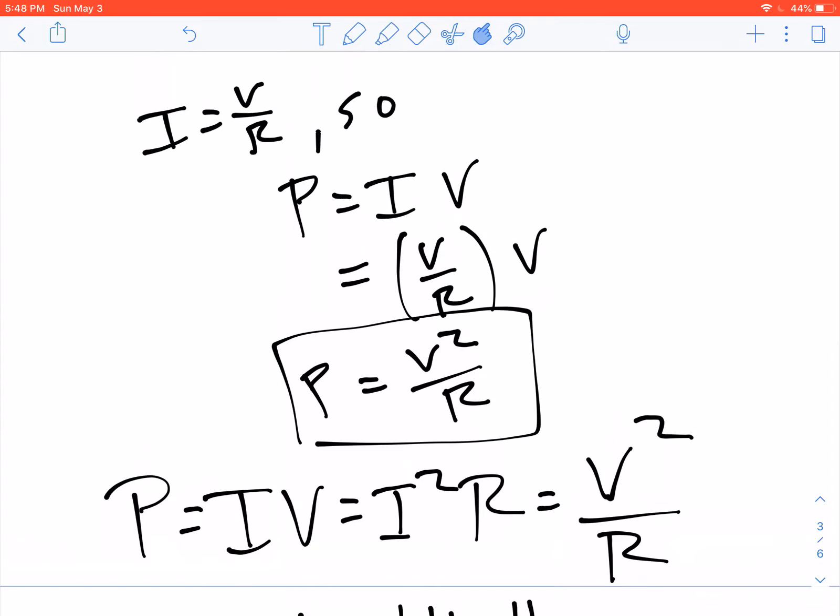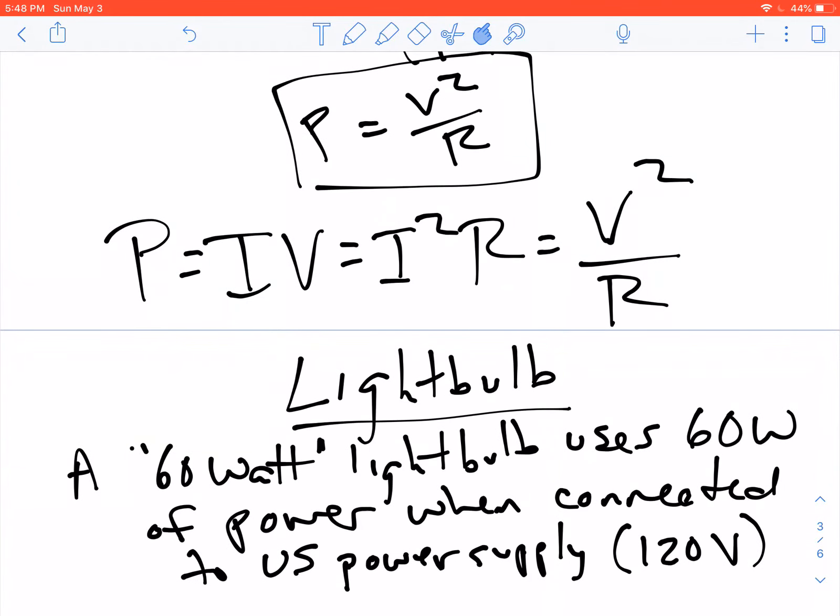Now I'd like to look at a particular example. If you're familiar with light bulbs, a 60 watt light bulb is a light bulb that uses 60 watts of power when it's connected to the U.S. power supply. In the U.S., when you plug something into the wall, you get 120 volts out. It varies a little bit, but 110 to 120 volts is what you get coming out of the wall when you plug something into it. So a light bulb is a resistor that uses 60 watts when plugged into that power supply.